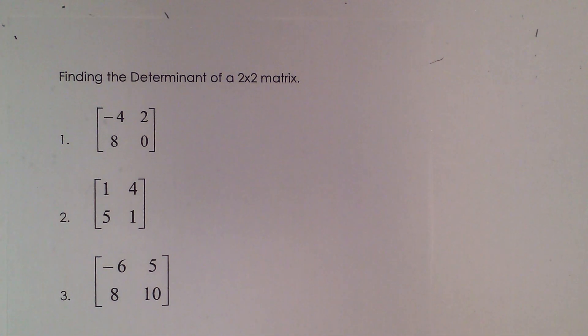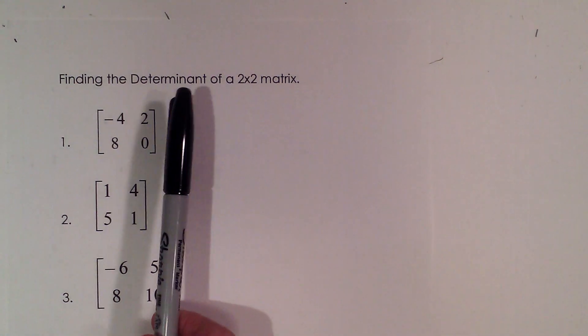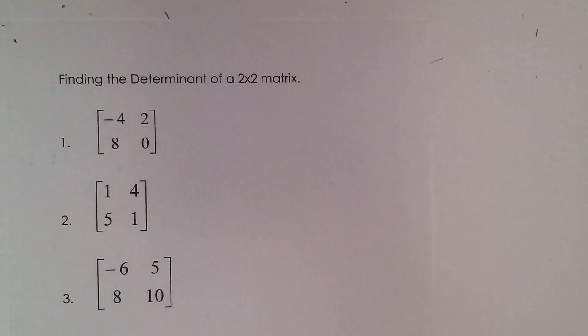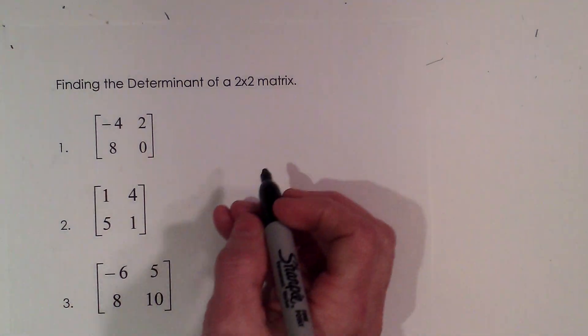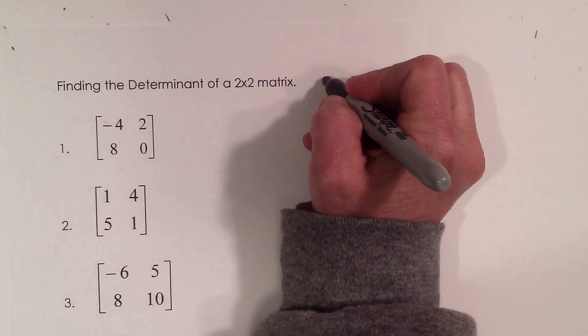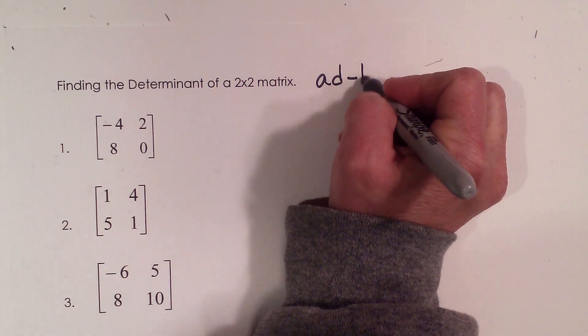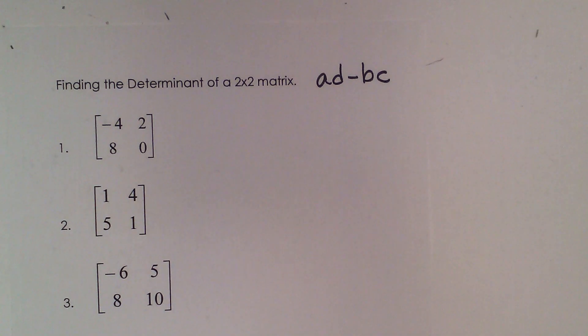Welcome to Moo Moo Math. Today we're going to learn how to find the determinant of a 2x2 matrix. There is a very simple formula that is just ad minus bc. There's our formula.